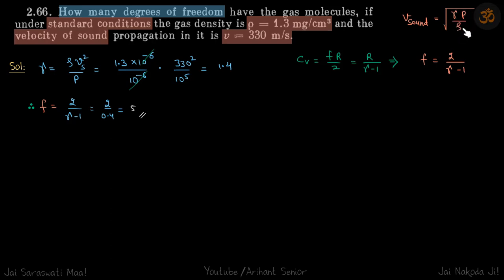So we are writing in this form because rho is given to us. We need to find degrees of freedom, and we know that degrees of freedom is given by 2 by gamma minus 1. This is the small derivation.